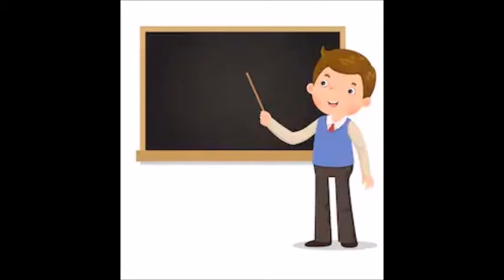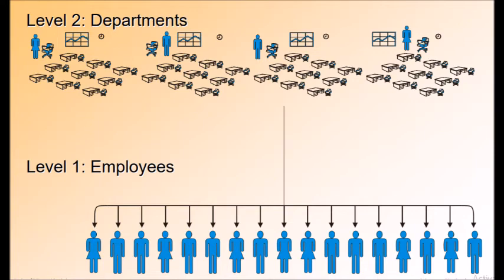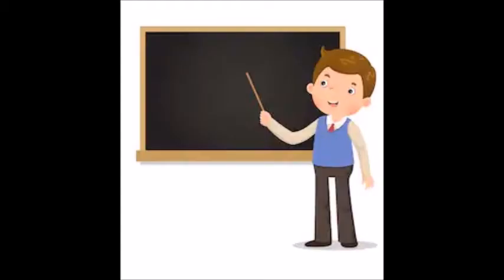Here is an example to understand hierarchical linear modeling. In this picture, employees working in an organization are nested within departments. Employees are at level 1 and are nested within departments, which represent level 2. So employees at level 1 are nested or clustered within departments at level 2. This is an example of a two-level model.